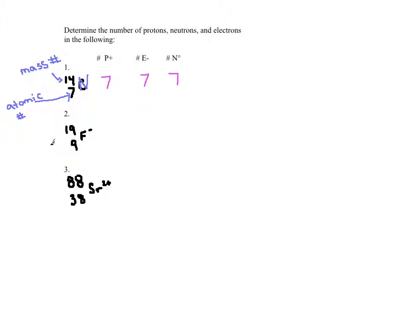Let's look at F minus. It's got a mass number of 19, atomic number of 9, and a negative 1 charge. Remember, you don't have to put a 1 here — it's implied. For number of protons, that's just my atomic number, so 9. For electrons, if I had no charge, that would mean I have 9 electrons. Since I have a minus 1 charge, that tells me I have 1 more electron than proton. Since I already have 9 protons, I need 10 electrons. For neutrons, I take my mass number, subtract my atomic number from that, and I get 10.